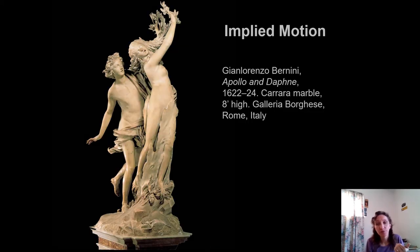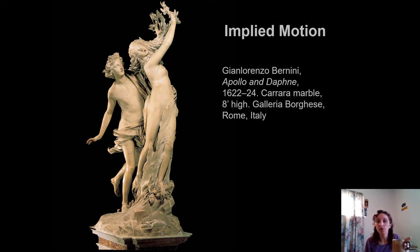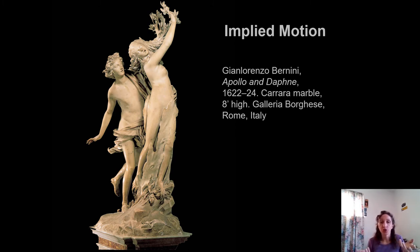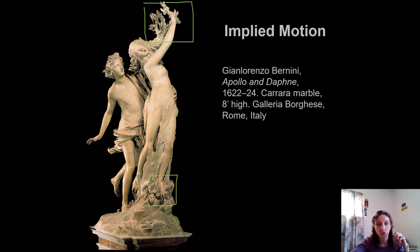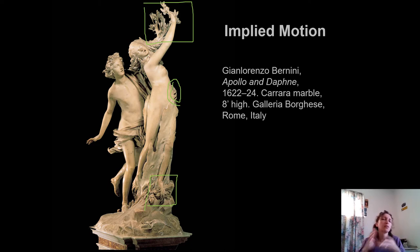Here's another Bernini sculpture — Apollo and Daphne, a story from antiquity. Apollo pursued Daphne in an unrelenting and unacceptable way, and rather than deal with that, Daphne prayed to her father — a god — to turn her into a tree. This is that exact moment: her feet are becoming roots as Apollo is just about to get his hands on her. It captures the most dramatic moment of the story — the moment you turn into a tree.